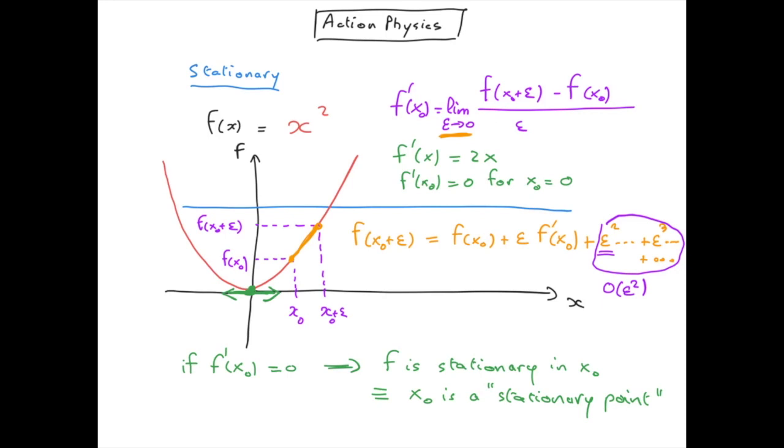We call the first term f of x0 the zeroth order in epsilon, because it doesn't depend on epsilon. And the second term, the first order in epsilon. While all the terms in epsilon squared and higher are called higher order.